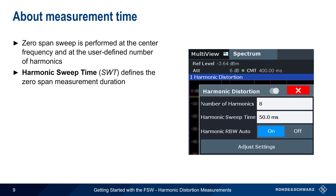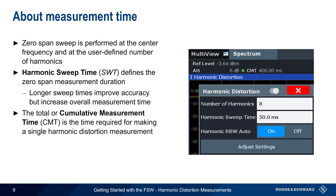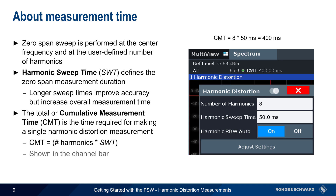The Harmonic Sweep Time parameter defines the zero-span measurement duration. Longer sweep times improve accuracy but will also increase overall measurement time. The FSW displays this as the cumulative measurement time — the total time required to measure the fundamental and all defined harmonics. This is simply the number of harmonics times the measurement time. Here, 8 harmonics with a measurement time of 50 milliseconds each yields a cumulative measurement time of 400 milliseconds.